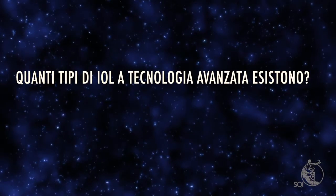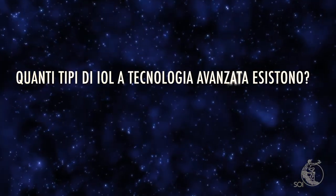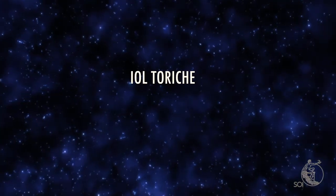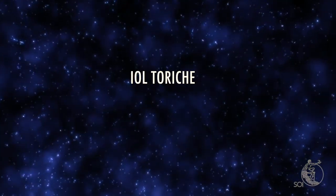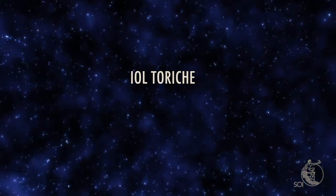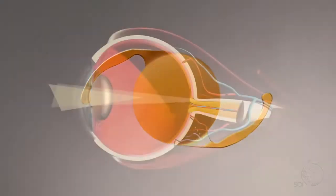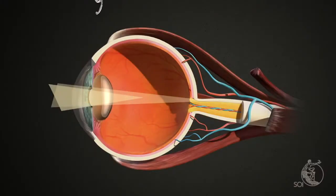How many types of Advanced Technology IOLs are there? There are various types of intraocular lenses including toric IOLs. These are monofocal like standard IOLs normally provided by the National Health System but they correct astigmatism.